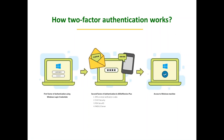Two-factor authentication during Windows logon works as follows: the first factor is the Windows logon credentials — the user enters their Active Directory username and password. They are then redirected to the AD Self Service Plus console for the secondary factor, which could be an SMS or email-based verification code, Duo Security, RSA SecurID, or RADIUS authentication. Once verified, the user gets seamless access to their Windows machine.